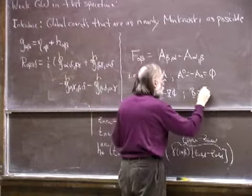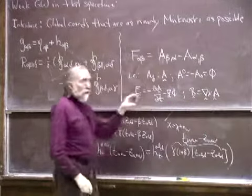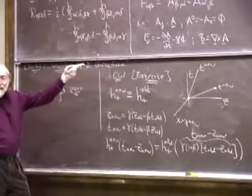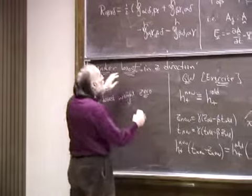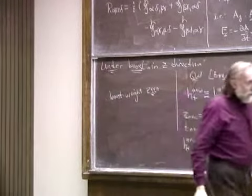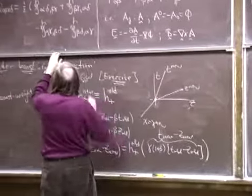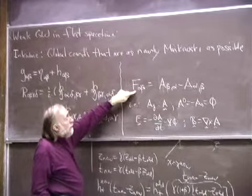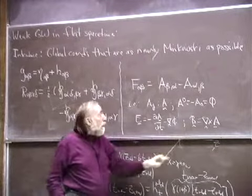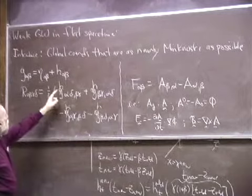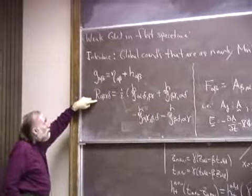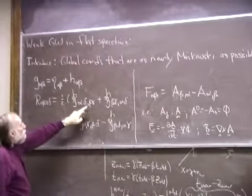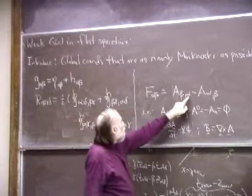The point of this comparison is: the vector potential is something from which you generate the force-producing electromagnetic field — the electric and magnetic fields. Similarly, the metric perturbation H is something from which you generate the tidal-force-producing Riemann tensor. So H is a potential that you differentiate twice to get the Riemann tensor, whereas A is a potential that you differentiate once to get the electromagnetic field tensor.